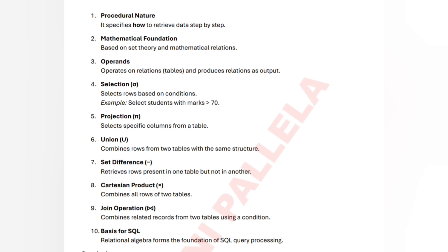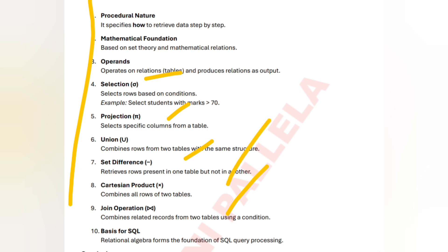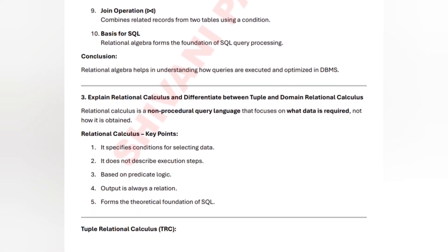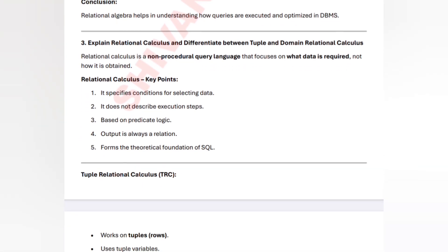Next is union — union combines rows and columns. Next is set difference — the symbol is minus (−) — it presents rows present in one relation but not in another. There are different key concepts along with their symbols, and you must draw the symbols in your answer. Relational algebra is helpful for understanding query language and getting optimized queries in database management systems.